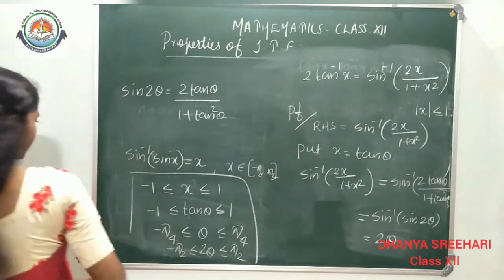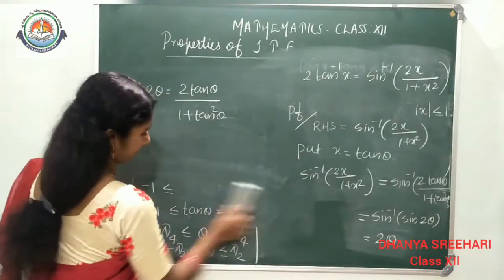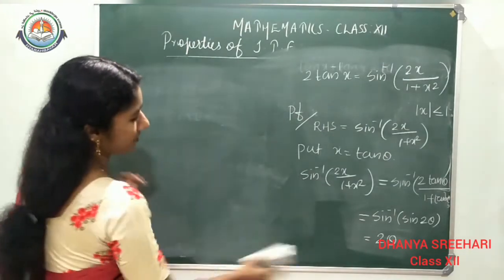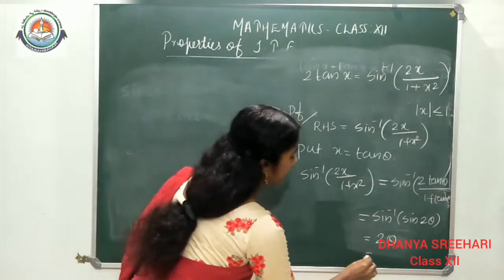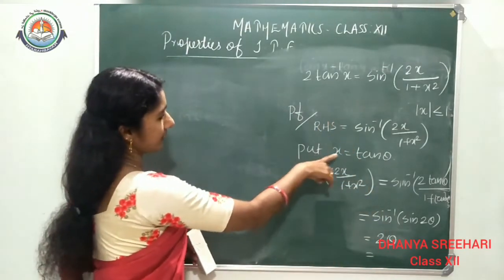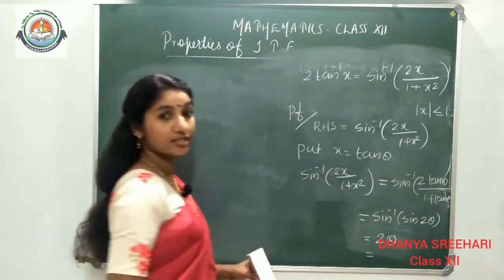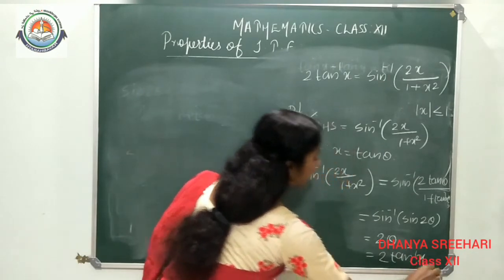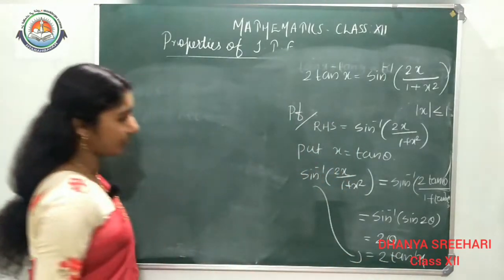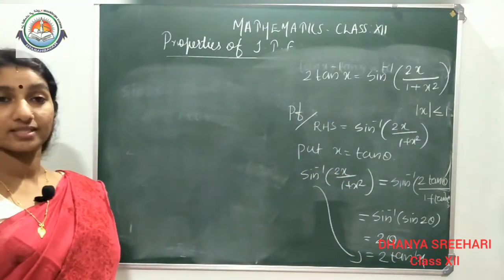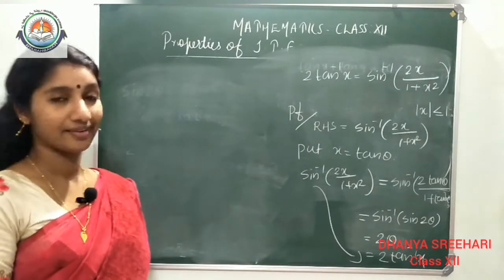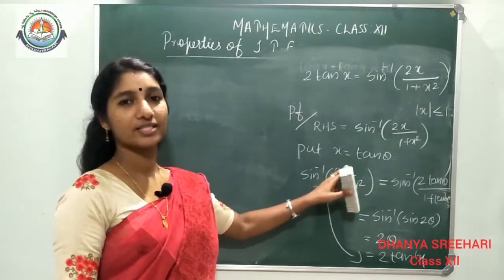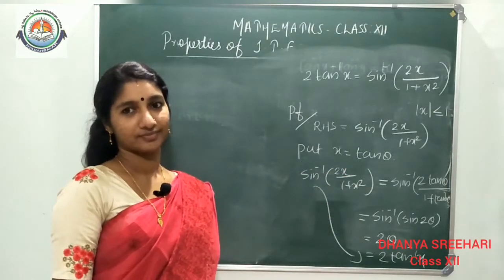Replacing θ = tan⁻¹(x), we get sin⁻¹(2x/(1 + x²)) = 2tan⁻¹(x), or equivalently 2tan⁻¹(x) = sin⁻¹(2x/(1 + x²)).